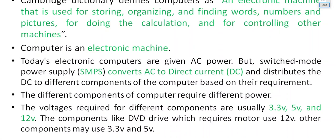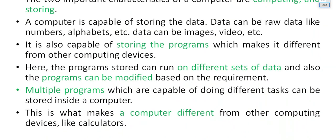An important point is that different components of a computer require different voltages — like 3.3 volts, 5 volts, and 12 volts. The SMPS takes 220 volts AC and splits it into different DC components, and each DC component is given to the corresponding components of the computer.